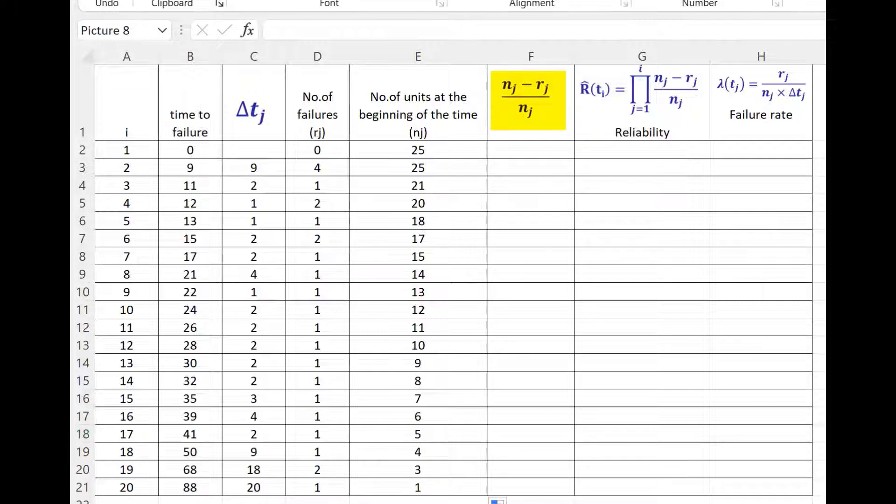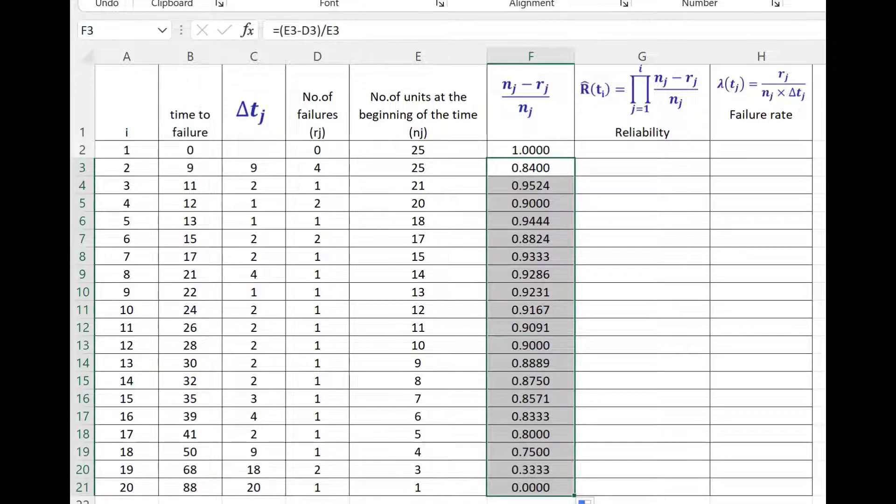Now we calculate the term nj minus rj upon nj for each step. That is pretty straightforward. We just use the formula equal to nj minus rj divided by nj. Of course, we have to put a bracket for the numerator. For the first step, it will be obviously 1. For the next step, we just calculate in the same way. Let us do it for one more step. nj minus rj is now 4. So 21 are left. Divided by 25. So that gives me 0.84. I copy this and I get different values of reliability for each step.